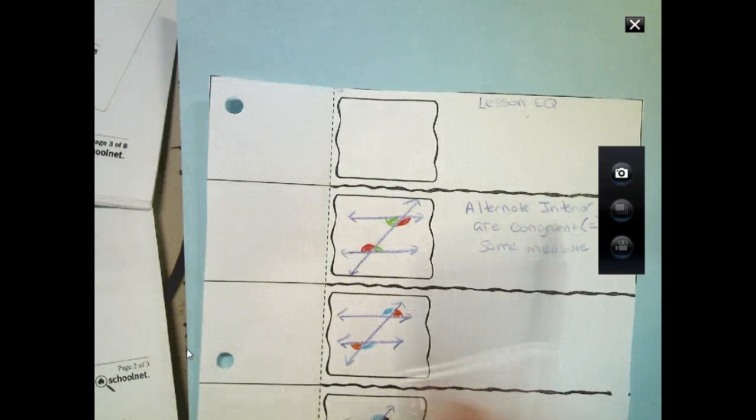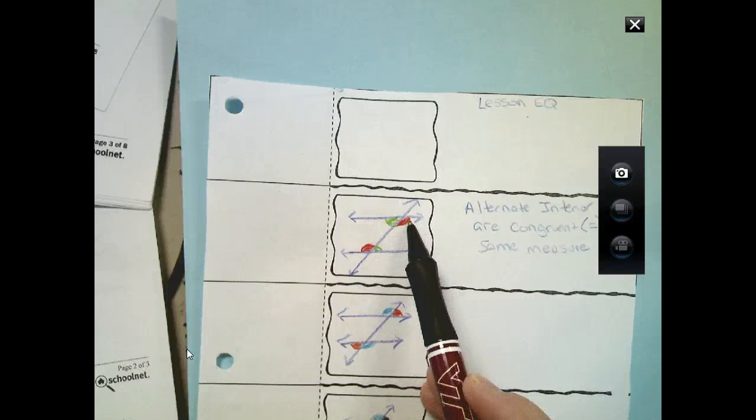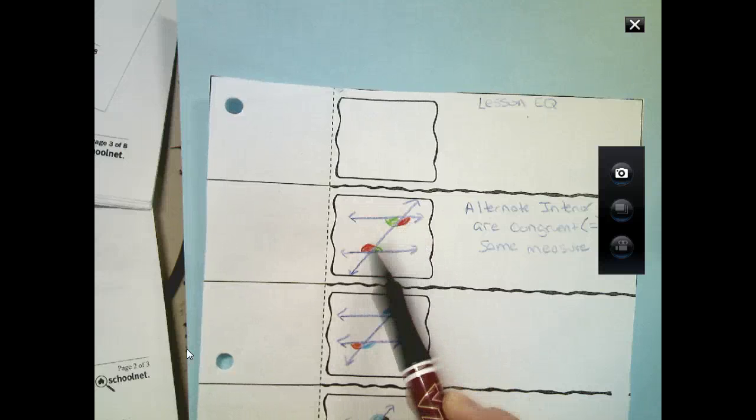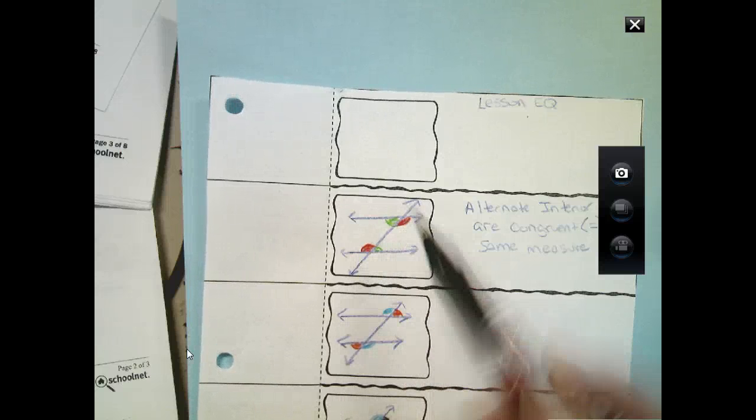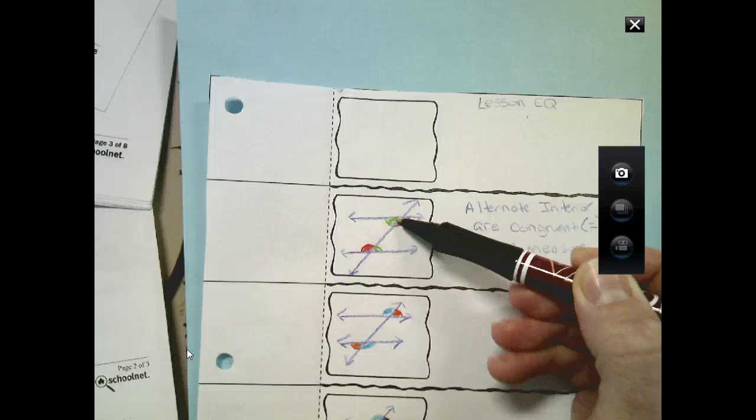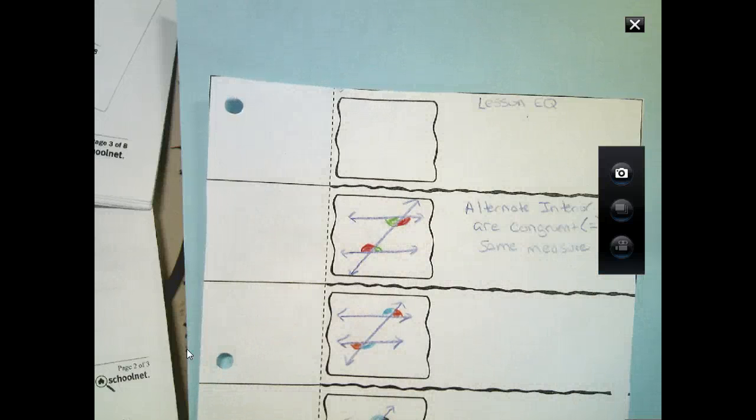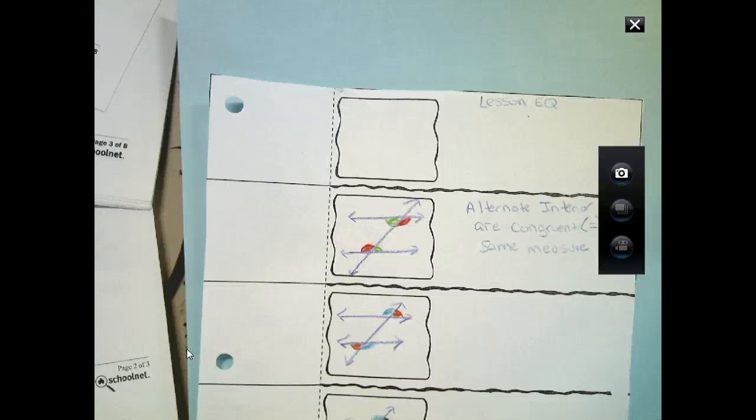And so, what I did here, the alternate interior angles, I put the red. See, they're alternate. And they're inside the parallel lines. So, alternate interior angles, the red. And then I did the other set of alternate interiors, green. So, that takes care of your alternate interior angles.